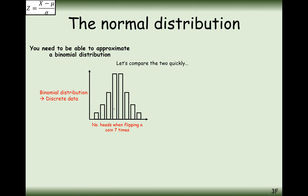The middle bar will be for three heads and four heads out of seven; the outer bars will be for two and five successful head flips; the slightly outer bars for one and six successful head flips; and the last ones for zero and seven successful head flips. You can only get a whole number as your outcome, so it doesn't go in a continuous loop — you can't get decimal numbers.